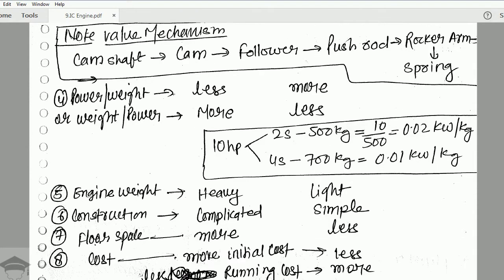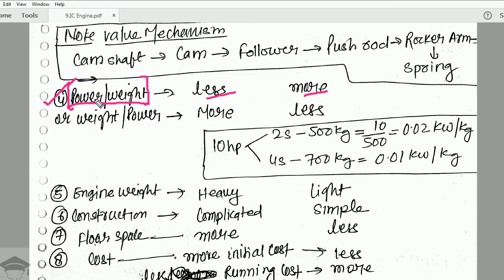Now, power-to-weight ratio is a very important term used to decide the efficiency and overall performance of an engine. The power-to-weight ratio is less for a four stroke engine and more for a two stroke engine, because in a four stroke engine the weight is more compared to the power output. For a two stroke engine, since the weight is less, for the same power the ratio will be more.